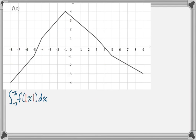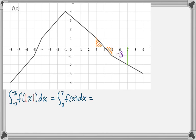We want the integral from negative 7 to negative 3 of f of the absolute value of x dx. By symmetry, this is exactly the same as the integral from 3 to 7 of f of x dx, because f of the absolute value of x is an even graph. From 3 to 5 I get two regions that cancel each other: positive one half and negative one half — those are gone. So really I'm just going from 5 to 7, which is a rectangle and a triangle that add up to negative 3. The integral overall is just negative 3.